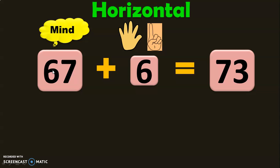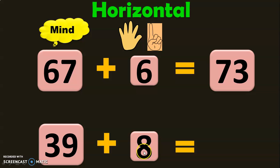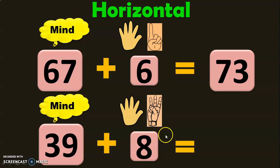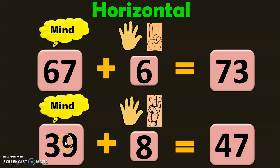Dear viewers, it is very important for children to know the numbers in series from 1 to 100 and beyond, otherwise addition using this kind of method will be difficult. Let us move on to the next example: 39 plus 8. Have 39 in the mind and 8 in the fingers — 5 fingers on one hand and 3 on the other. After 39: 40, 41, 42, 43, 44, 45, 46, and 47. So the answer for 39 plus 8 is equal to 47. Hope horizontal type of addition is very clear.